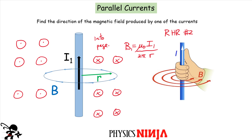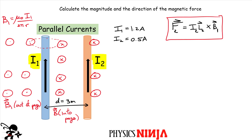Now I know the direction of the magnetic field produced by current I1 — it goes into the page on the right side, out of the page on the left, circumferential around the wire. To find the direction of the magnetic force on I2, I apply right-hand rule number one. I place my index finger in the direction of current I2 (upward), and my middle finger points into the page for the magnetic field. My thumb then gives the direction of force F2, which points toward current I1.